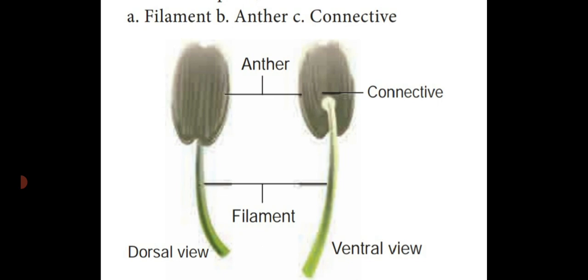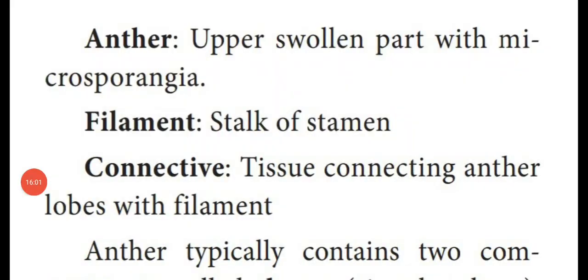See the diagram — the diagram of a stamen is very very important for two-mark questions. They will give the diagram and ask you to redraw and label the parts, and find out the name of the stamen and name of the figure. Dear students, now we are going to see each and every part of a stamen.